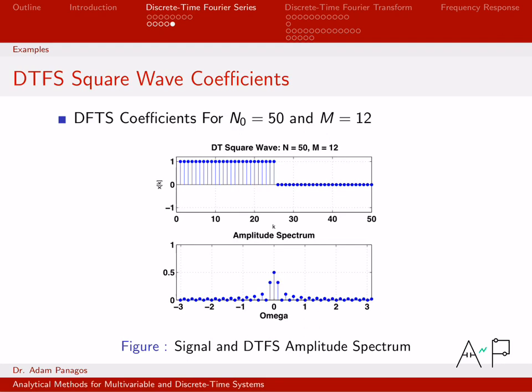That's it for this example. We have computed the DTFS coefficients of a square wave using the definition. That is the last DTFS example. We're going to move on to talking about the discrete time Fourier transform, which is the transform we use for non-periodic discrete time signals. Thanks for watching.